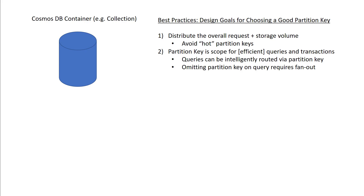You want to choose a partition key such that both your request volume and storage volume are nicely and evenly distributed. Number two, you want to choose a partition key that allows you to efficiently route your queries and scope your transactions. Unlike many other distributed databases, Cosmos DB supports atomic transactions over multiple records at a time. To do this, Cosmos DB scopes multi-record atomic transactions to a particular partition key value. If you have requirements around atomic multi-record transactions, incorporate that into your choice of partition key. You also want a partition key that can be represented in the WHERE clause of your queries.